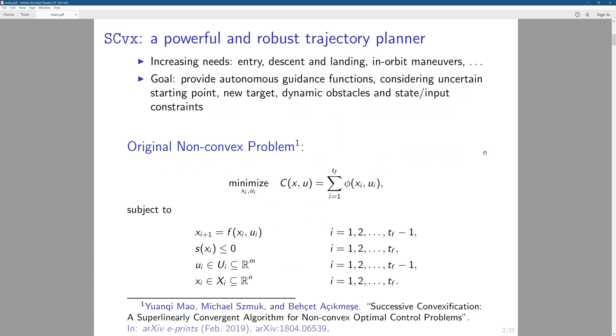So in the context of optimal control or spacecraft applications, we have seen an increasing need for powerful and robust trajectory planners to do applications like planetary re-entry, descent and landing of rockets, and also in-orbit maneuvers of satellites, like its interactions with the space station. So the goal of this research, which is the SCvx solver, is to provide autonomous guidance functions with consideration of uncertain starting points and changing targets and also dynamic obstacles and state or input constraints.